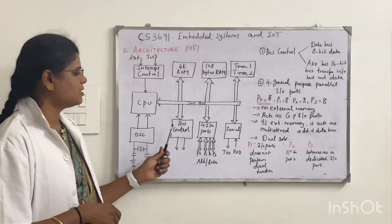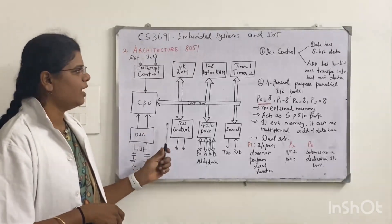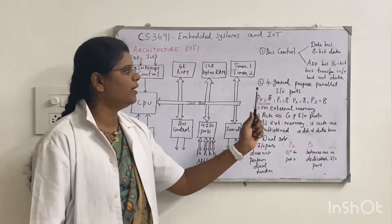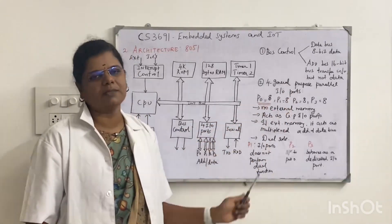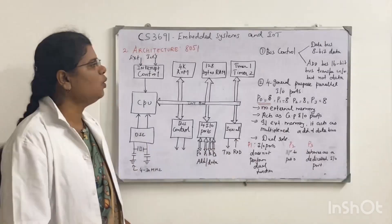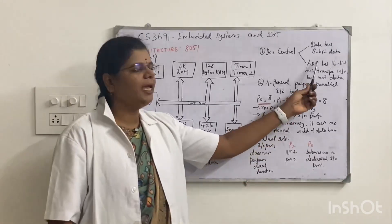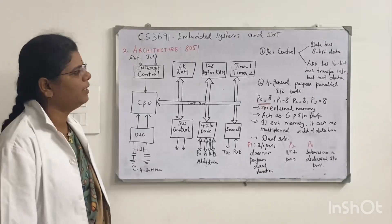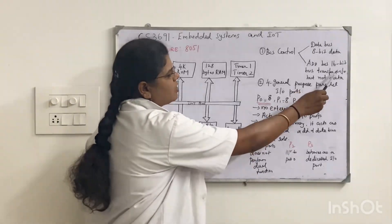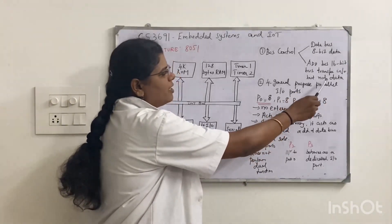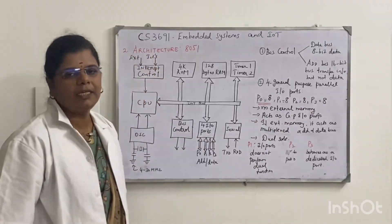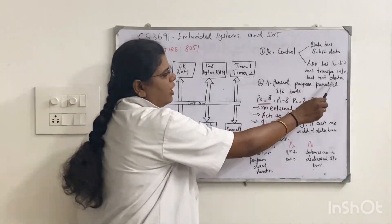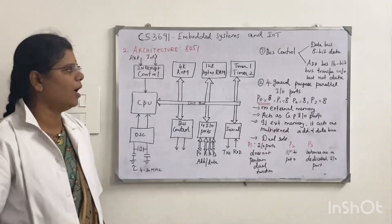So we have the bus control, and in this bus control we have the data bus and also the address bus. The data bus is 8-bit. In the address bus we have a 16-bit bus, and this 16-bit bus transfers information but not data.